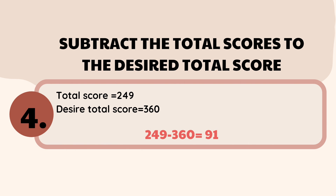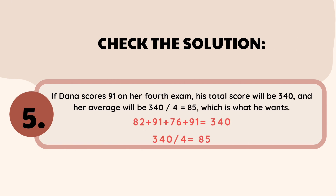For the last step, check the solution. If Dana scores 91 on his fourth exam, his total score will be 340, and 340 divided by 4 equals 85. So 82 plus 91 plus 76 plus 91 equals 340, and 340 over 4 equals 85. That confirms 91 must be his score on the fourth exam to achieve an average of 85. That is how we solved problem number one.